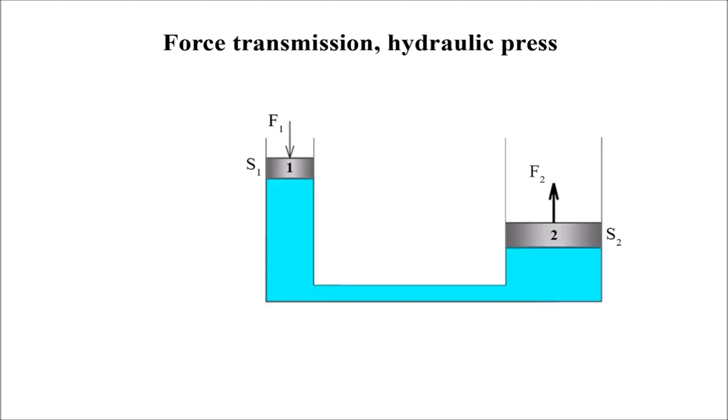When force F1 acts on area S1, a pressure is given that acts at every point in the system, which includes surface S2. The attainable force F2 is given by this principle.